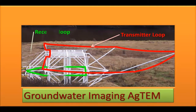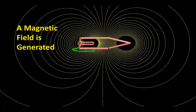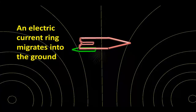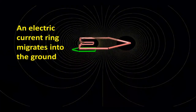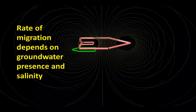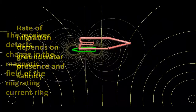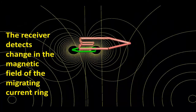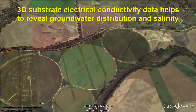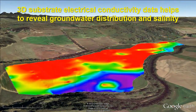It contains various transmitting and receiving antennae. The large transmitter loop creates a magnetic field, then extinguishes that field. The ground then responds by forming a ring of current beneath the transmitter loop. This ring migrates — analogous to a smoke ring — into the ground at a rate dependent on electrical conductivity at each depth within the ground. The receiver loop detects changes in the magnetic field created by the migrating current ring. Data is processed to reveal a three-dimensional substrate electrical conductivity image that helps to reveal groundwater distribution and salinity.